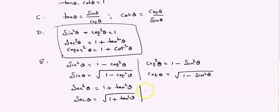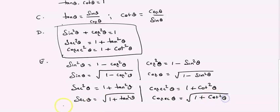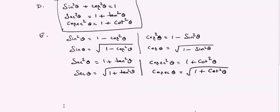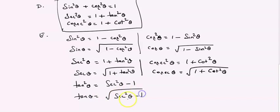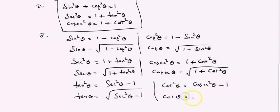Tan squared theta equals secant squared theta minus 1, so tan theta equals root of (secant squared theta minus 1). Cot squared theta equals cosecant squared theta minus 1, so cot theta equals root of (cosecant squared theta minus 1). You should know about all these corollary relations.